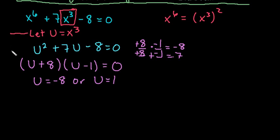Remember that our original equation, we let u replace x to the third. So we have to go back and now just rewrite it as x to the third equals negative 8 or x to the third equals positive 1.